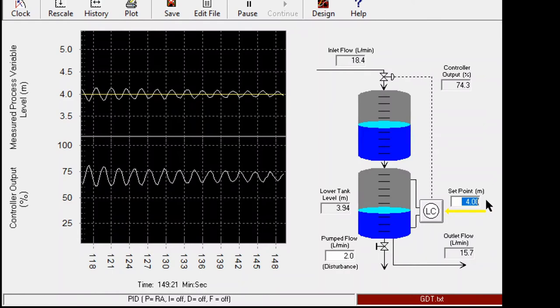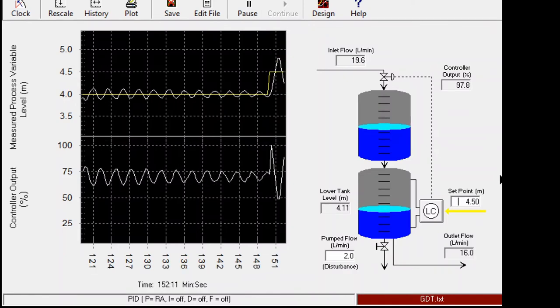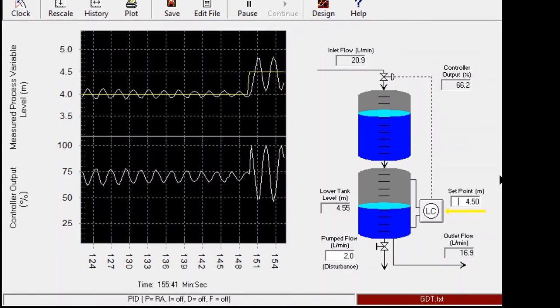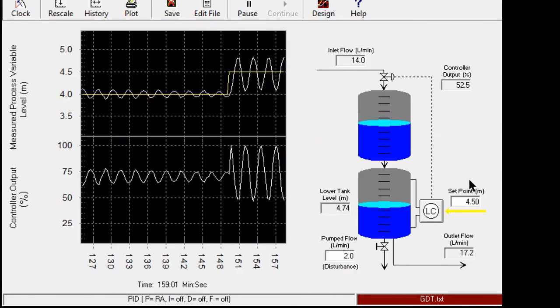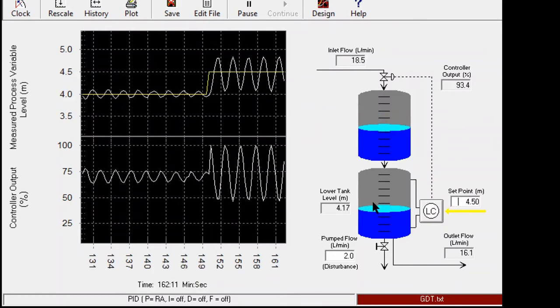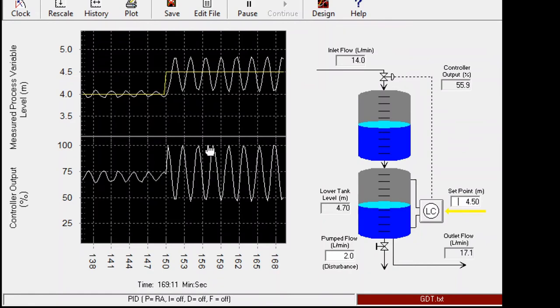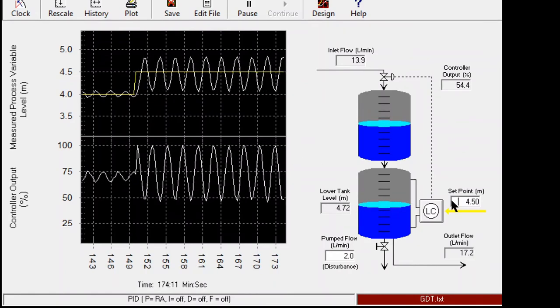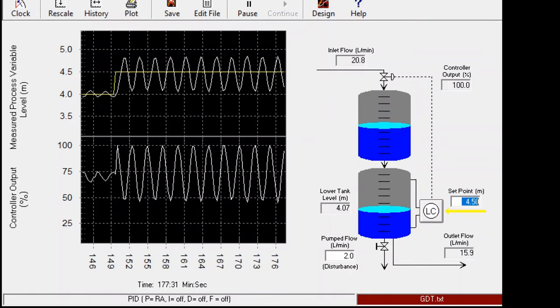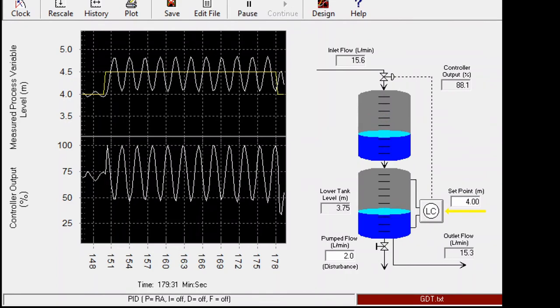And now if I make it from 4 to suppose 4.5, we see that the oscillation looks like sustained, however it's reaching the valve saturation. So we'll see whether without reaching valve saturation we can get something oscillating or not. So again bring it back to 4.